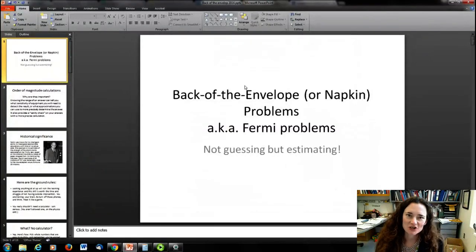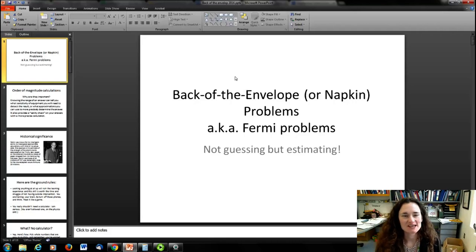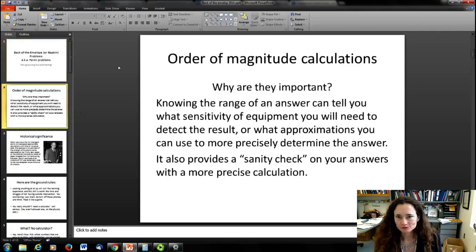This week's lecture is about back-of-the-envelope calculations, which are also called Fermi problems, named after the famous physicist Enrico Fermi who loved these types of problems and made them popular. Back-of-the-envelope calculations are basically calculations where you're estimating the order of magnitude of a value.